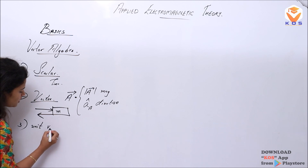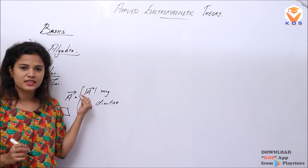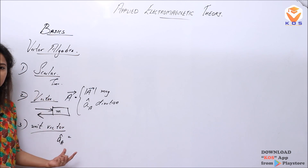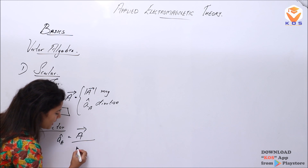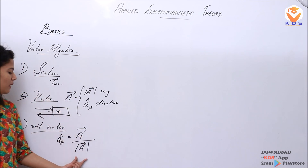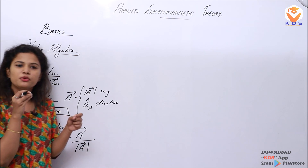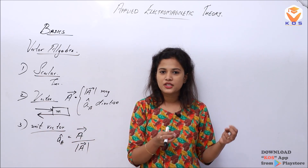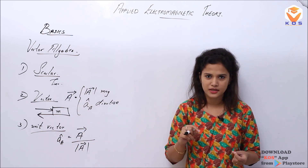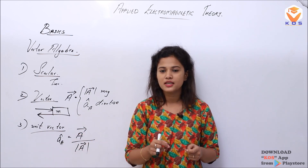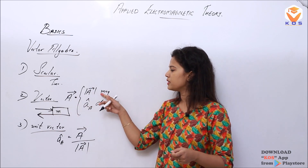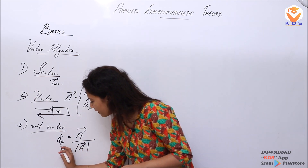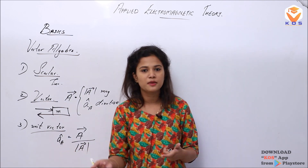Unit vectors: for a vector A, the corresponding unit vector a cap will be equal to the vector A divided by its corresponding magnitude. That is the unit vector equation. A unit vector is itself a vector, but its magnitude is equal to unity. The magnitude of a unit vector equals one.